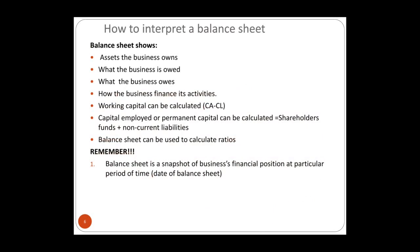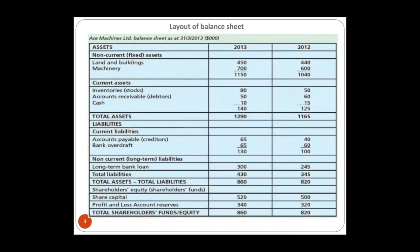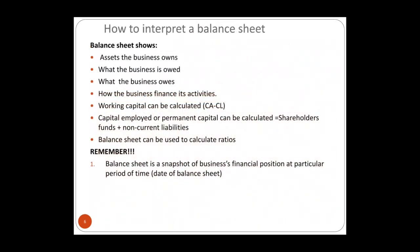From the balance sheet, I can see the assets the business owns, what the business owes, who owes the business money, and how the business finances its activities. For example, looking at this balance sheet, you can see the business took a long-term bank loan of 300,000 dollars in 2013. The balance sheet tells us whether the business relies on long-term loans as a source of finance, and shows details like debtor balances and cash holdings.